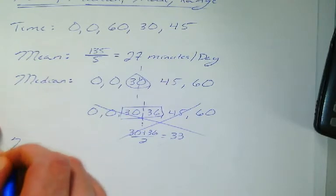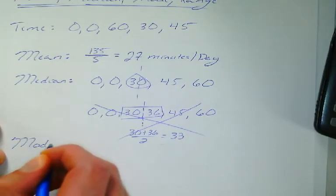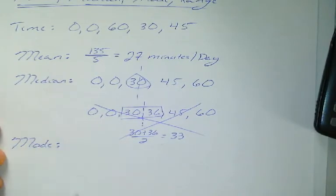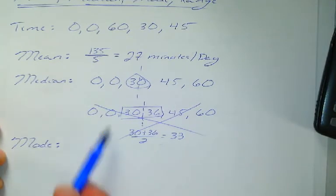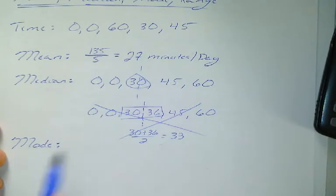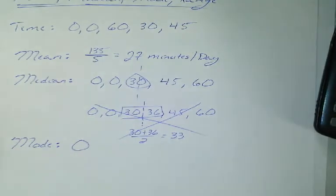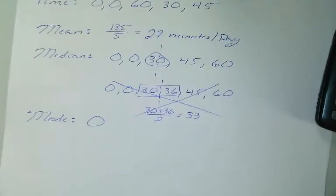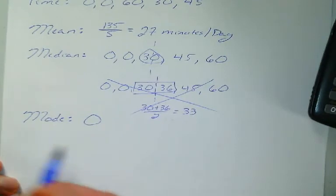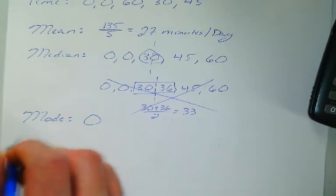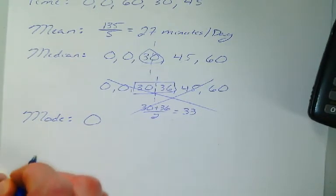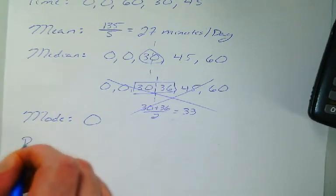Next one is mode. Mode is the data point that occurs the most. Well, I had two days where I didn't play at all. So, our mode in this case is 0 minutes. Alright. Next one that we didn't talk about in class. This is new. You might have done this in 6th grade, so it's not entirely new. Is range.